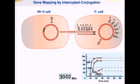What we have learned: the four genes studied here are located on the chromosome in the following sequence — Azi, then TonS, then lac+, and then gal+, with Azi being closest to the F-factor.